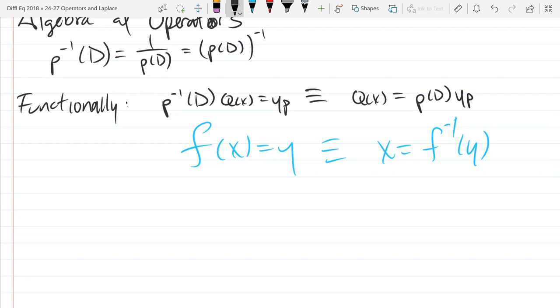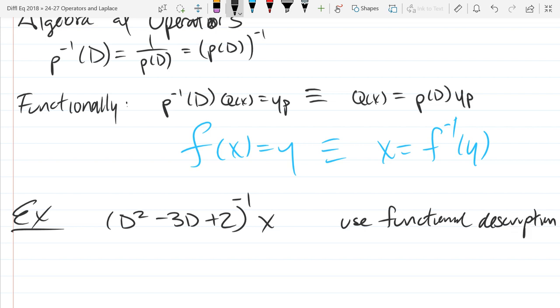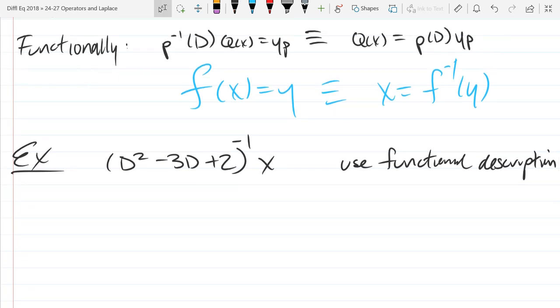So let's do an example. Before I've told you anything other than how to use it functionally, we're going to compute this example here. So here's our operator. I want the inverse operator on x. We're going to use the functional definition. So we're going to use the functional description above. Alright, first of all I don't have an equation, I have an expression. So what I'm going to do is just set this equal to y. And then I'm going to move the operator to the other side.